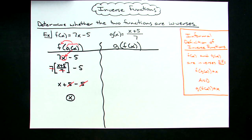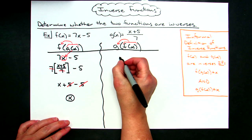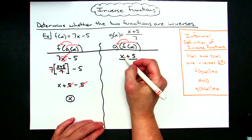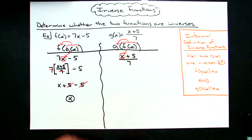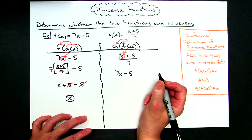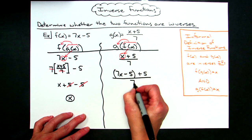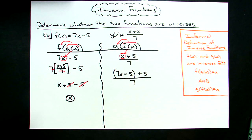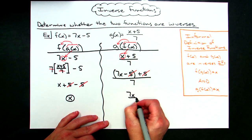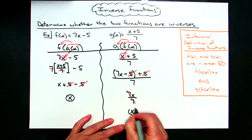Now on the right-hand side, I'm going to take the f function and put it into the g function. Writing down my g function: x plus 5 all over 7. I put the f function in where the x is, so it becomes 7x minus 5, plus 5, all over 7. Simplifying, minus 5 plus 5 cancels, leaving 7x over 7. The 7s cancel, and that leaves just an x.